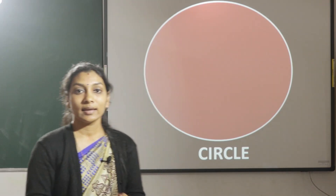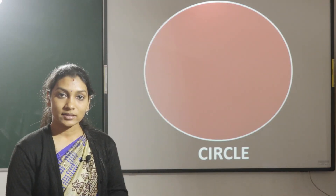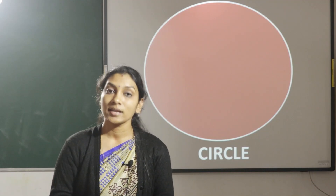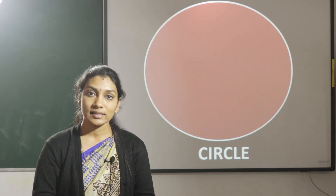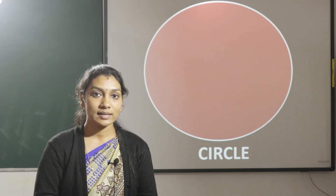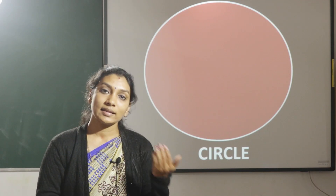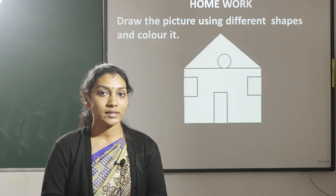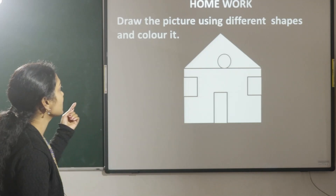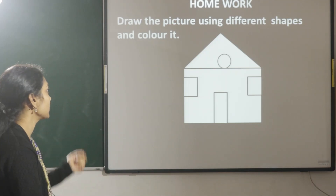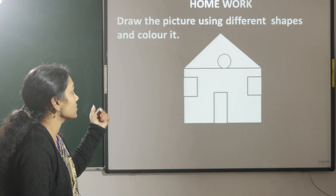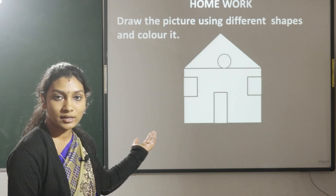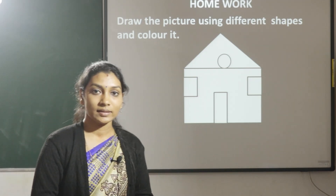So today in this class you have learnt a few basic shapes: square, rectangle, triangle, and circle. In the next class you will learn about solid shapes. So take this as homework children — draw a picture using different shapes and colour it. Thank you.